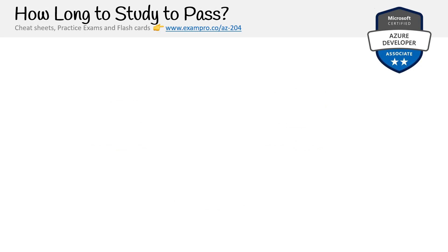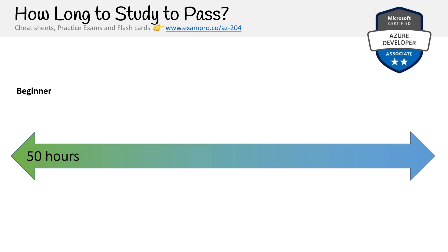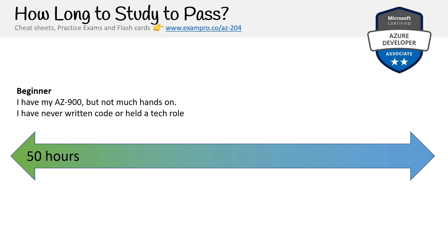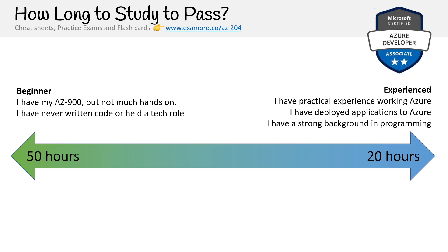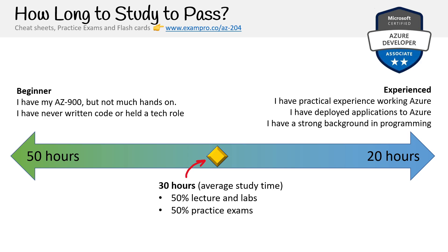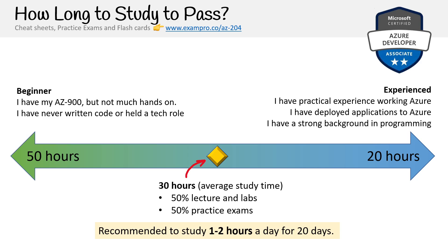How long does it take to pass? It depends on you, but to give you a general idea: if you're a beginner with the AZ-900 but not much hands-on experience and you've never written code in a tech role, you're looking at more hours — even if you've taken the AZ-104, it's still going to take a while since this is a different beast. If you're experienced, have practical knowledge working on Azure, deployed apps, and have a strong programming background, you're looking at around 20 hours. I like to set a goal of 30 hours average study time. About 50% of that is lectures and labs, and the other 50% is practice exams. I recommend studying one to two hours for 20 days and spreading it out, because doing too much at once means you risk forgetting information. Make sure it becomes part of your long-term memory.